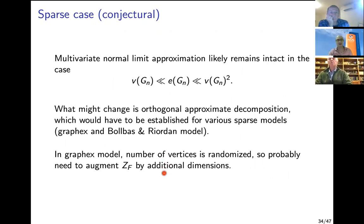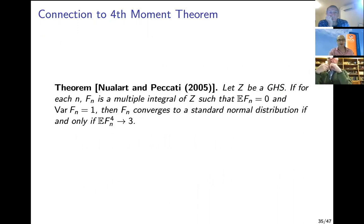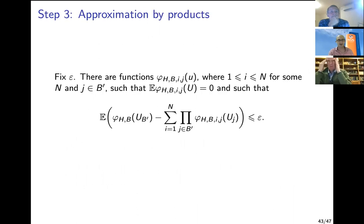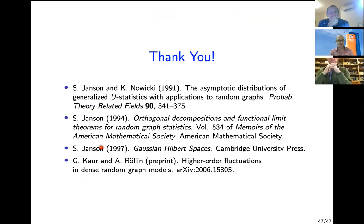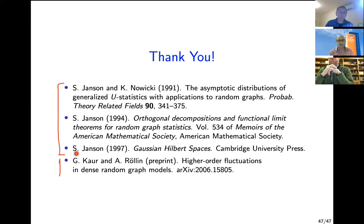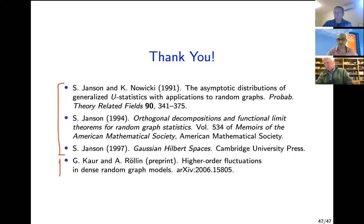I'll leave it there — 45 minutes are over. Thank you. The paper where we discuss all of this is titled 'Higher-Order Fluctuations in Dense Random Graph Models.' Much of the theoretical background comes from the book Gaussian Hilbert Spaces, particularly the chapter on generalized U-statistics, which contains abstract material we had to adapt to our setting.